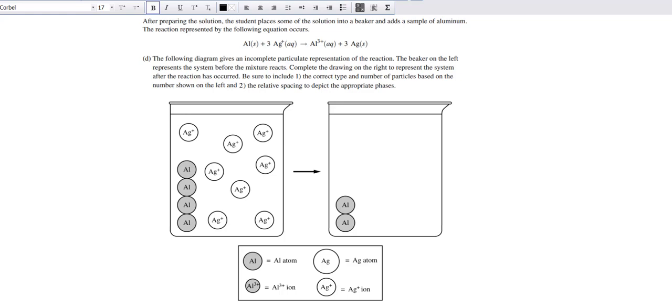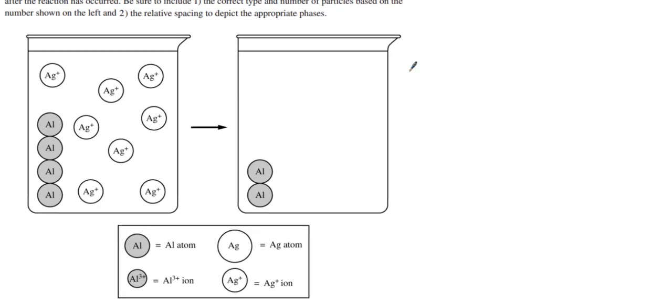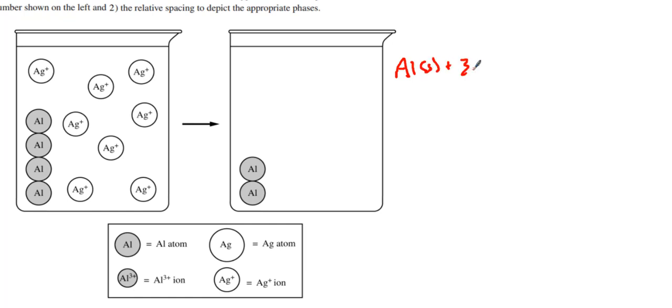Now we have a particle diagram. The particle diagram is really important if you count the number of particles. Look at the amount of aluminum solid: we have four. I'm going to do an ice chart here, that's how I think about doing these problems. We have 3Ag⁺ in equilibrium going forward into Al³⁺ plus 3Ag solid. Let's think about initial, change, equilibrium. We have four aluminum particles here. How many Ag⁺ ones do we have? We have eight. How many of everything else? We have zero and zero.